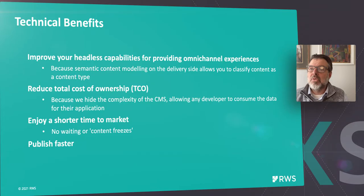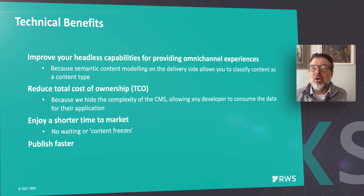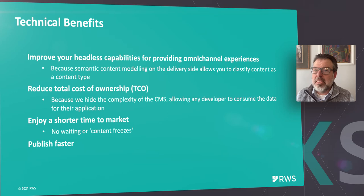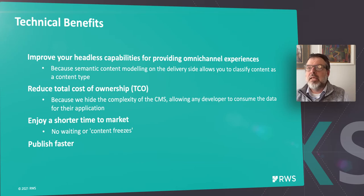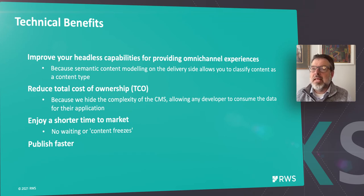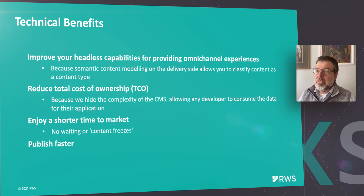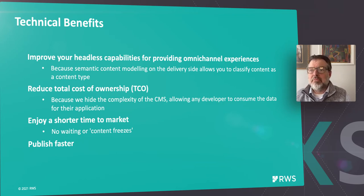Now let's look at some additional technical benefits for our customers. Semantic content modeling on the delivery side allows you to classify content as a content type to improve your headless capabilities for providing omnichannel experiences. It enables out-of-the-box native support for our content-as-a-service model, reduces total cost of ownership by hiding the complexity of the content management system, and allows any developer to work on consuming this data for their application. Decoupling content and delivery application releases shortens time to market, and publishing also becomes much faster because no rendering is involved.